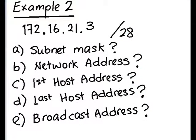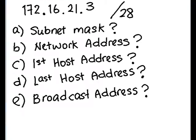Let's take a look at another example of a classless subnetting, in this case given the IP address 172.16.21.3/28. So let's work out the usual stuff: the subnet mask, the network address, the first host address, the last host address, and the broadcast address. We begin with the subnet mask — the CIDR is /28, so using /28 we can work out the subnet mask.